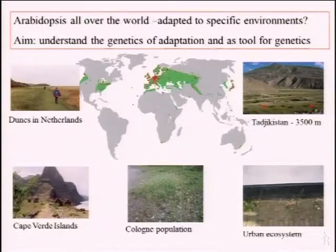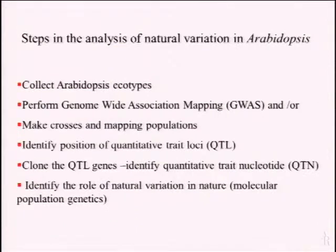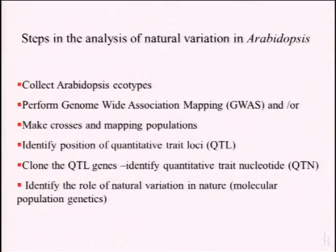How can we use the genetic differences which exist there to study natural variation? This has a number of steps. You start with a collection of accessions — there are thousands of them present. In the Netherlands alone, we collected more than 2,000 accessions, and that's a small country. You can do genome-wide association mapping, which was also mentioned briefly by Maria, working directly with these accessions. You have to phenotype them, or you can work with mapping populations, and then try to identify the genes that differ — often these are quantitative trait loci, where more genes control your trait.